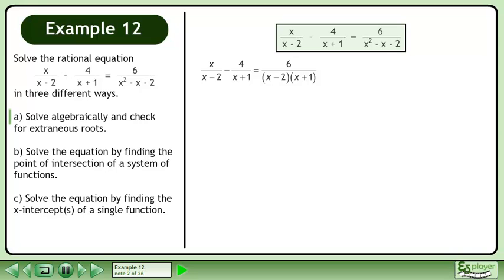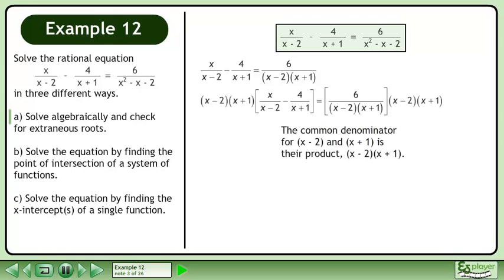On the right side, factor the denominator. The common denominator for x minus 2 and x plus 1 is their product, x minus 2 times x plus 1.